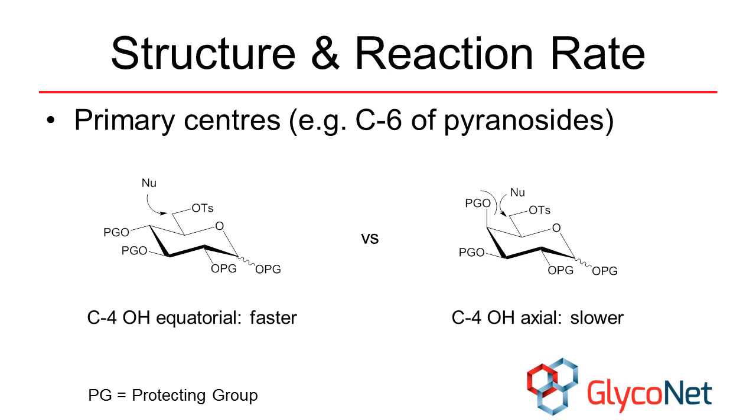The major influence on reactions at this position is the substituent at carbon-4. Axially-oriented groups at C4 will slow the reaction down due to steric clash with the incoming nucleophile.